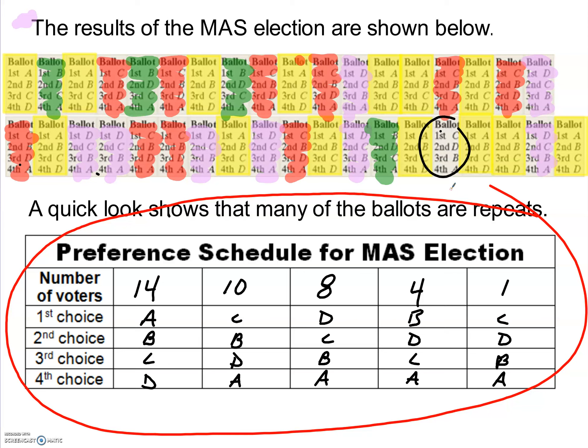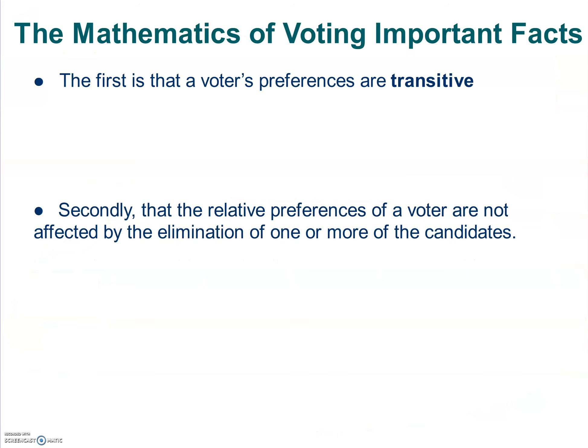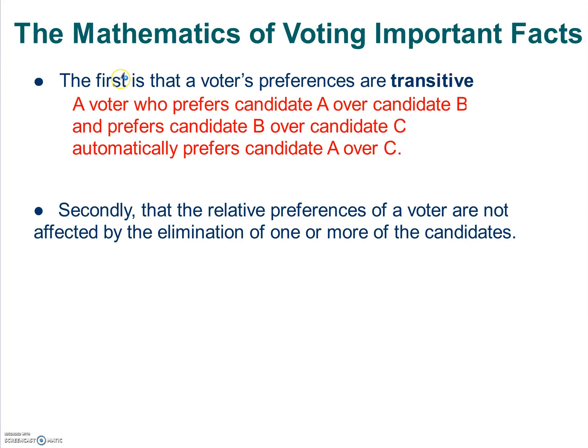A couple of important things about counting votes in a preference schedule. First, a voter's preferences are transitive. That means a voter who prefers candidate A over B, and B over C, automatically prefers A over C. Looking at the ballot A, B, C, D — if B is second and C is third, and A is already higher than B, then A must be higher than C.